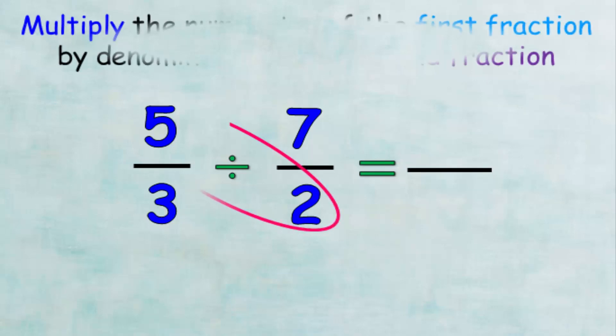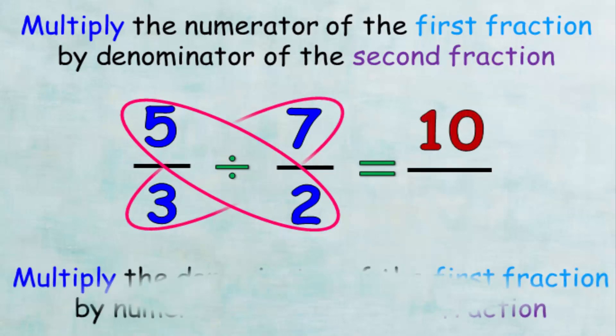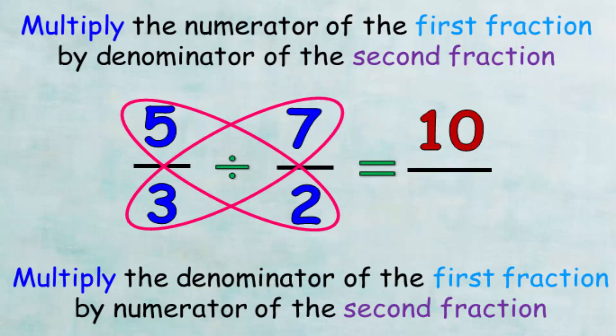So, we will multiply 5 by 2 to get 10 and put it in the numerator and multiply 3 by 7 to get 21 and put it in the denominator. Then, the result of the quotient of two fractions is 10 over 21.